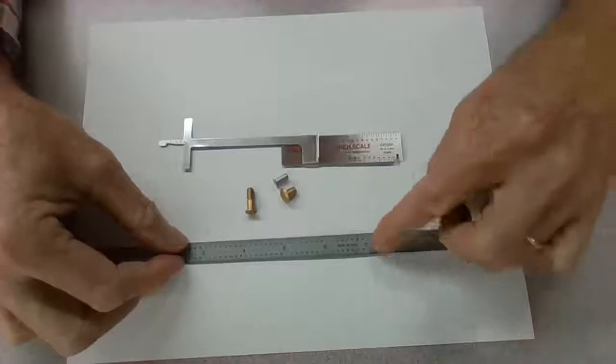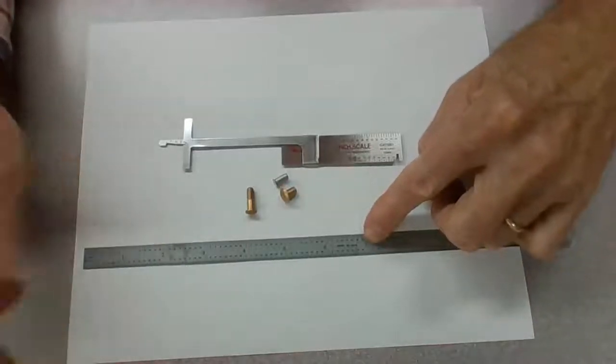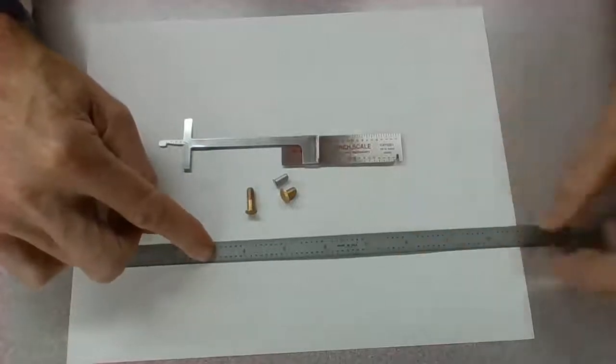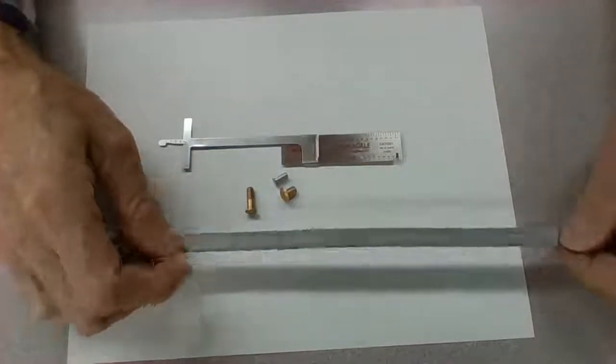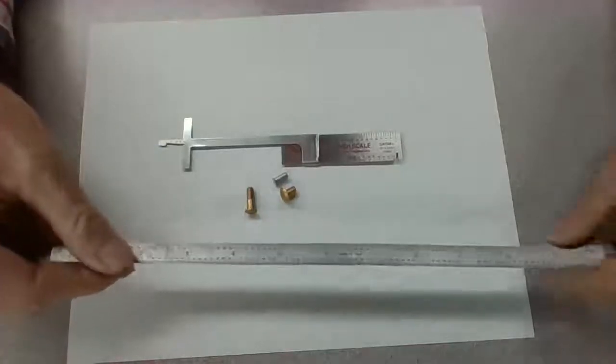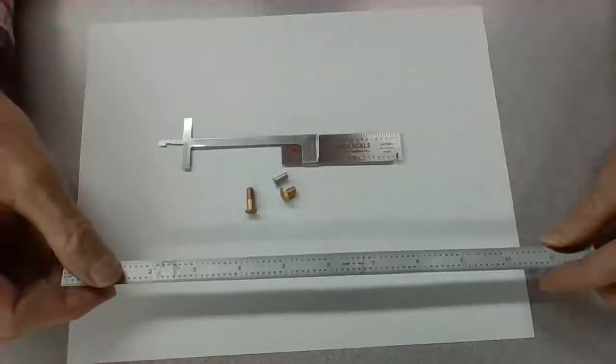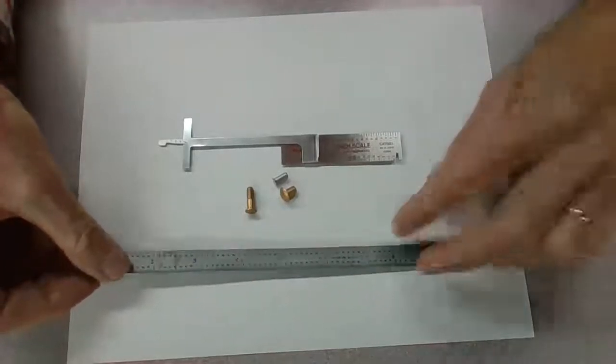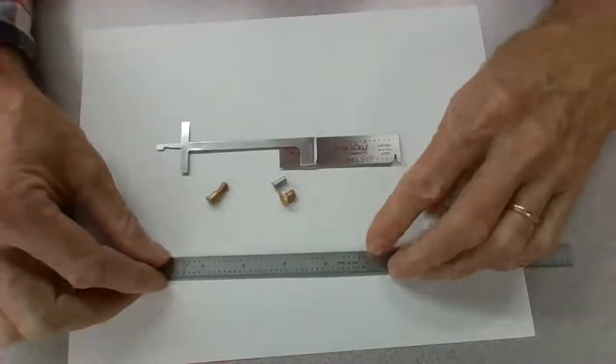Now, we're also going to be using a machinist scale to get the diameter of the rivets. And to do that, we are going to be using the fractional side. We're not going to be using the tenths side this time. We are going to be using the other side of our machinist scale. So, remembering that and having this all set up.